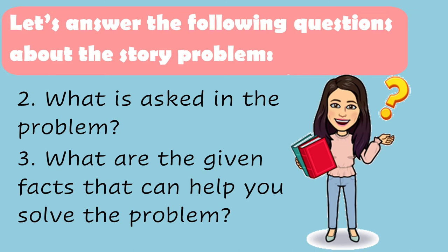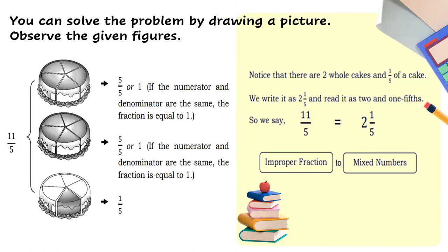Number three: what are the given facts that can help you solve the problem? Eleven-fifths of cake. There are three Yema cakes which represent eleven-fifths. The three cakes were divided into five equal parts. The first and second cakes represent five-fifths, or one whole. If the numerator and denominator are the same, the fraction equals one. The third cake has only one shaded part, representing one-fifth. Notice there are two whole cakes and one-fifth of a cake. We write it as two and one-fifth. So, eleven-fifths equals two and one-fifth.